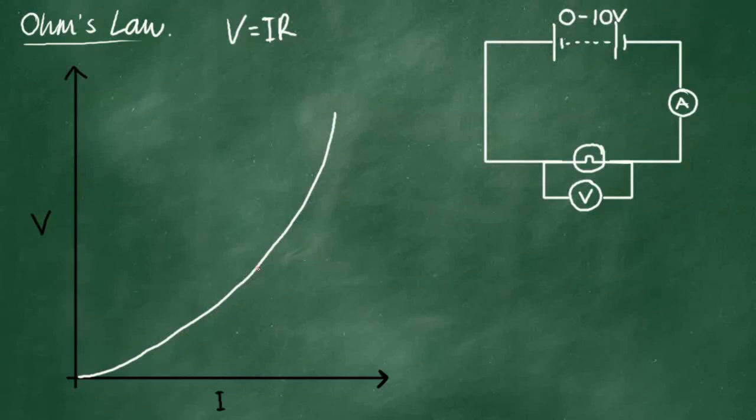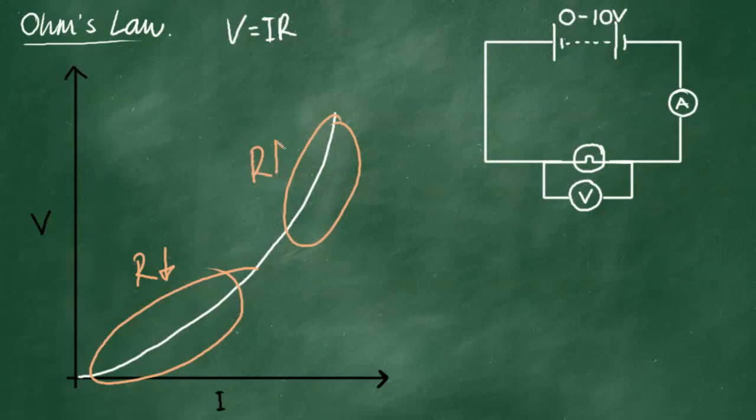So what we can say here from our Ohm's law is the gradient here is low, so the resistance is low. The gradient here is high, so the resistance is high. That is the characteristic that most conductors have.